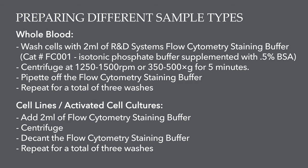In this protocol, we are using R&D Systems Flow Cytometry Staining Buffer, which is isotonic phosphate buffer supplemented with 0.5% BSA. This can be purchased on our website under catalog number FC-001.